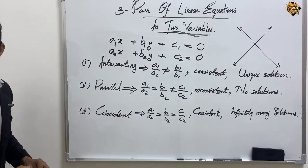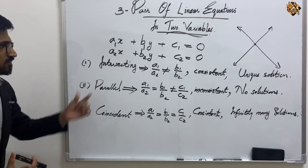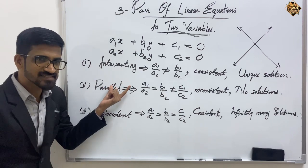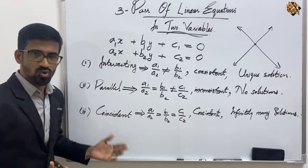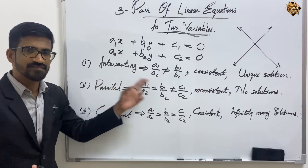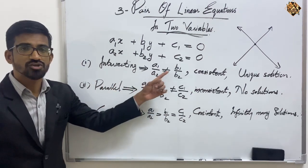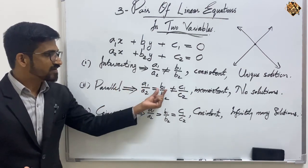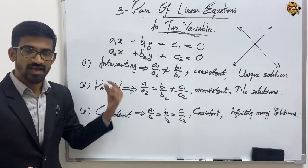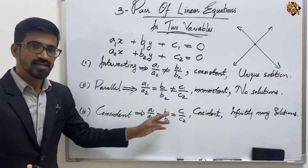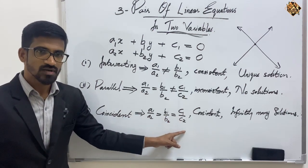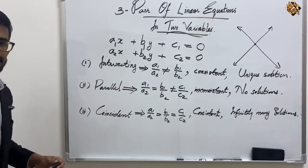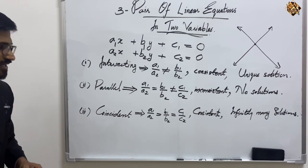Please take this to your notebook, students — it is very important. For any pair of linear equations there are three possibilities: intersecting, parallel, or coincident. If the lines are intersecting, a₁/a₂ ≠ b₁/b₂ (unique solution). If parallel, a₁/a₂ = b₁/b₂ ≠ c₁/c₂ (no solution). If coincident, a₁/a₂ = b₁/b₂ = c₁/c₂ (infinitely many solutions). When we solve questions from the first exercise you will understand more.